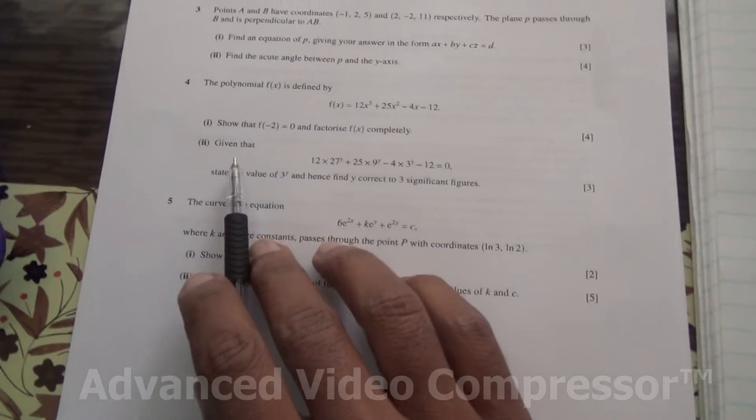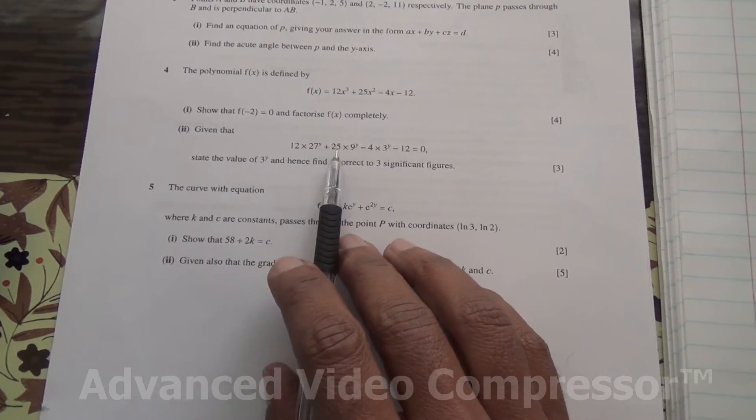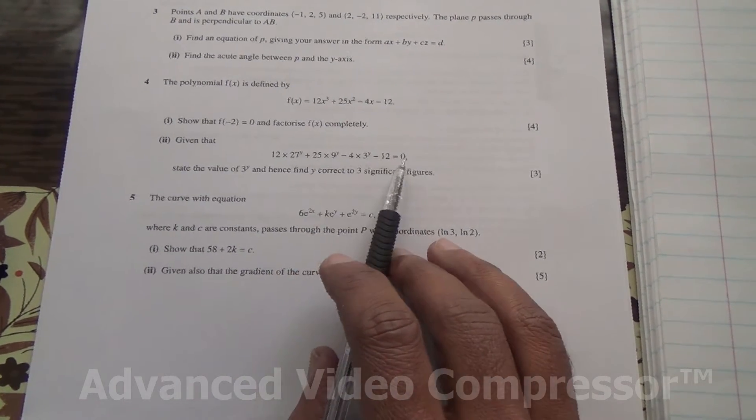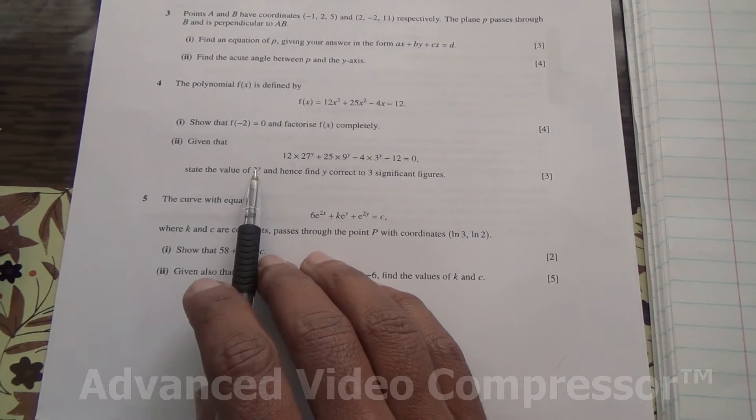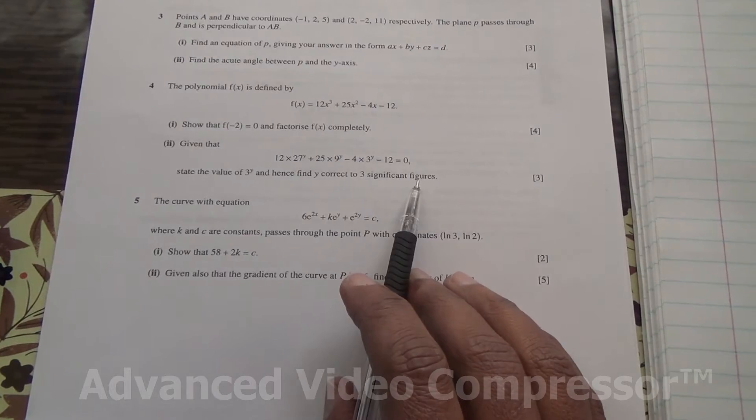For the second part, given also that 12 times 27 to the power of y plus 25 times 9 to the power of y minus 4 times 3 to the power of y minus 12 equals 0, state the value of 3 to the power of y and hence find y correct to 3 significant figures.